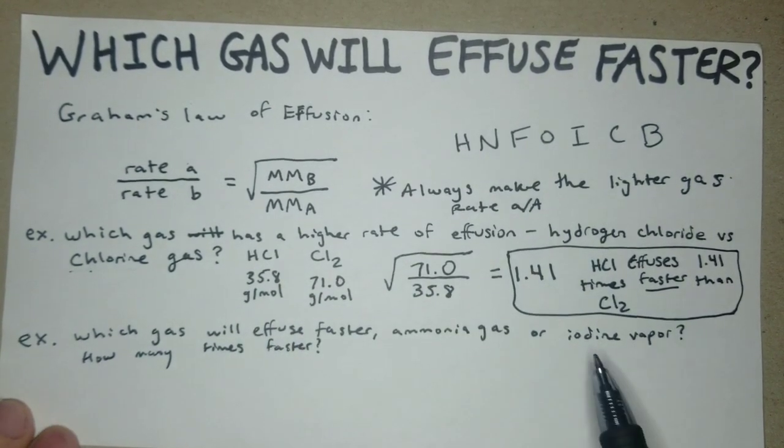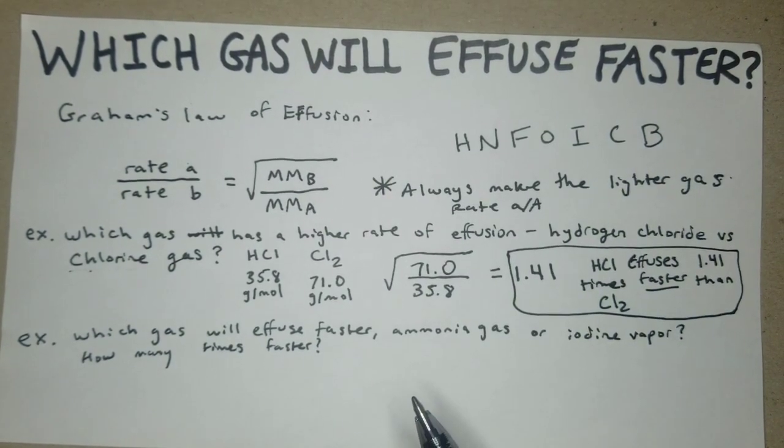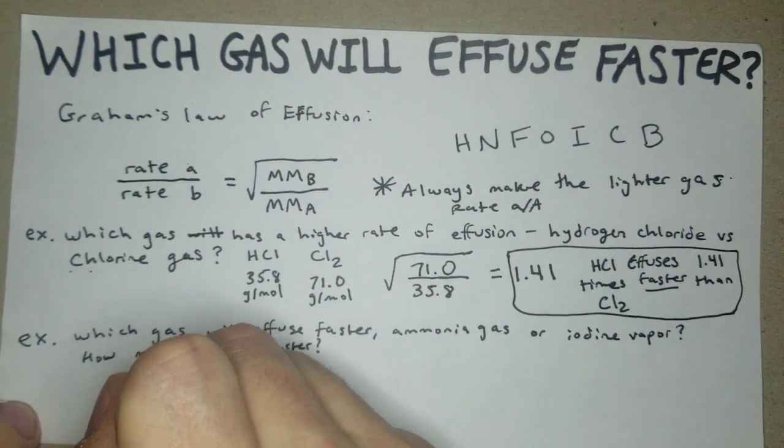This is going to go all the way back to when we were learning some of the common compounds. It's kind of something that you memorize, and if it's not on a sheet or something and you didn't know it, this is when you're going to be kicking yourself wishing that you had. So ammonia gas is NH3.